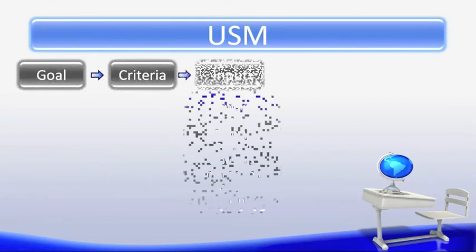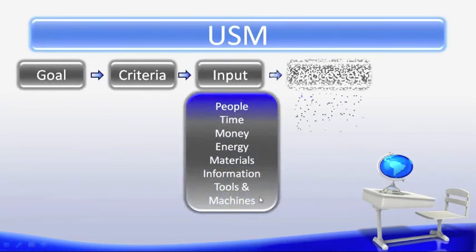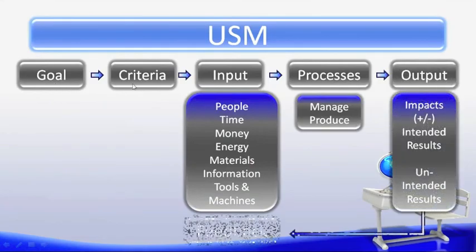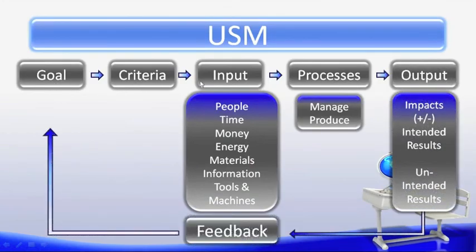And finally, a quick review of our USM. Our first step is goal. Our second step is criteria. And we have input — remember we have seven inputs here. And we have processes — we have two processes. Outputs — three outputs. And then our feedback. And we obtain our feedback through the entire system.